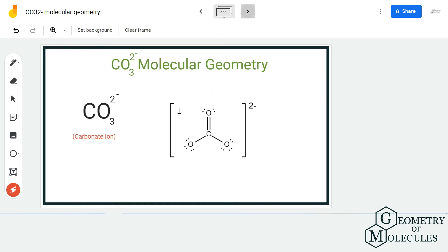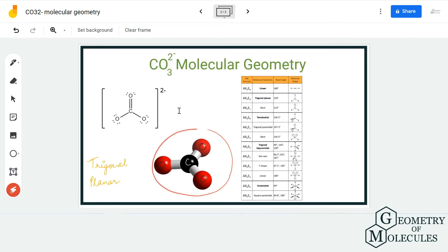When you look at its 3D structure, you can see that this atom over here is the carbon and it is forming bonds with three oxygen atoms. According to VSEPR theory, molecules take a shape in which they can minimize the repulsive forces.